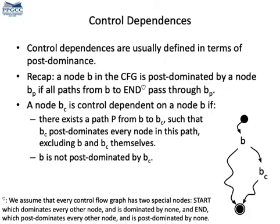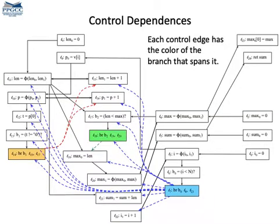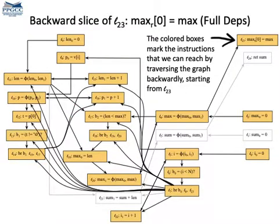The usual definition of control dependencies uses the notion of post-dominance. A node B controls a node BC if two conditions are true: first, B dominates BC; second, BC does not post-dominate B. Considering control dependencies, this is our new dependence graph. Notice that we have three predicates in this program — I have colored each one with a different color — and we can see which control dependencies they create. If we try again this time considering control dependencies, we get these nodes in orange as the backward slice of label 23. It's almost the entire program, actually.